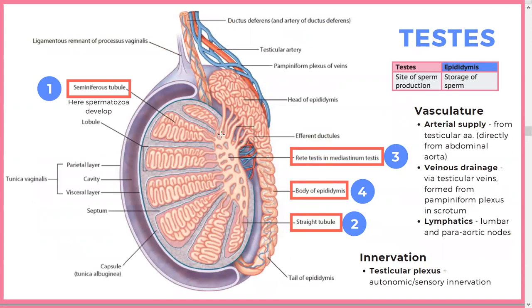Know the course of sperm. It starts in the seminiferous tubules, goes into the straight tubules, then into the rete testis — 'rete' meaning web — and then into the epididymis. The arterial supply of the testes is the testicular artery, directly from the abdominal aorta. Venous drainage is via the testicular vein formed from the pampiniform plexus — some theorize the left scrotum hangs lower because of slower drainage through the left pampiniform plexus, making it slightly cooler.